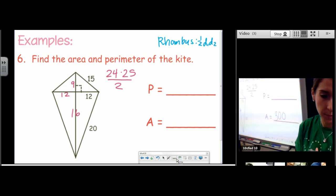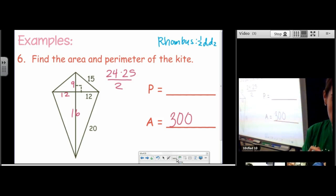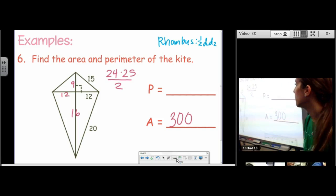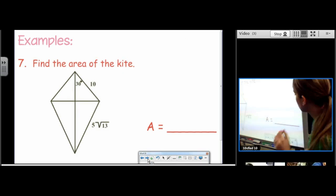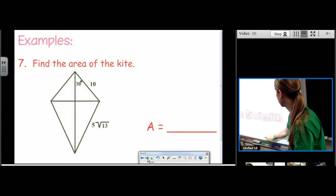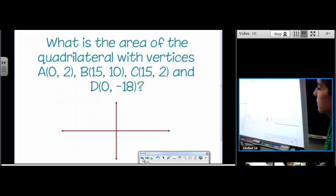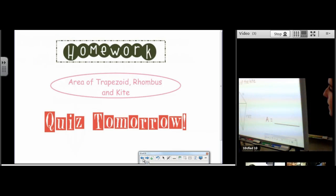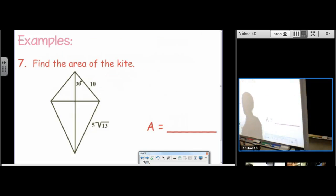I'm skipping perimeter. I think this is the last one. Goodness. Okay. We're going to make this the last one. So we have a kite. We have 30, 60, 90.